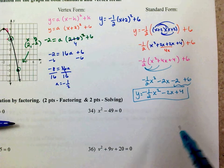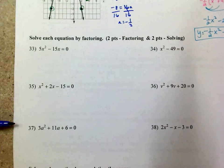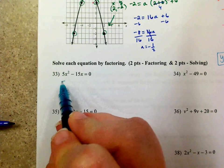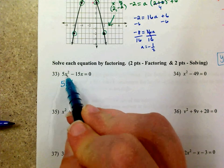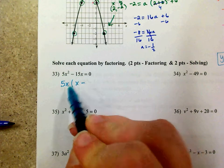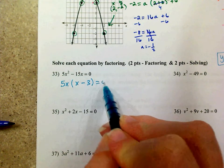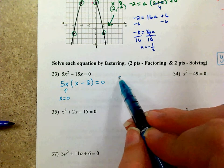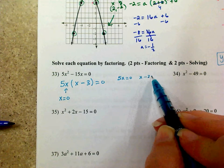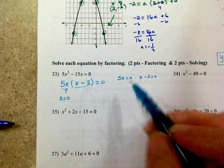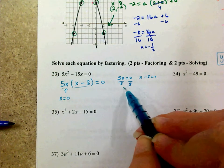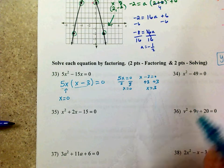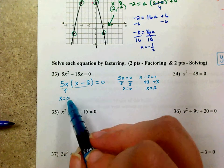For factoring: to solve 5x² − 15x, factor out 5x, leaving x(x − 3). Setting each factor equal to zero: 5x = 0 gives x = 0, and x − 3 = 0 gives x = 3. For x² − 49, factors of negative 49 that add to 0 are 7 and negative 7, giving (x + 7)(x − 7), so x = ±7.